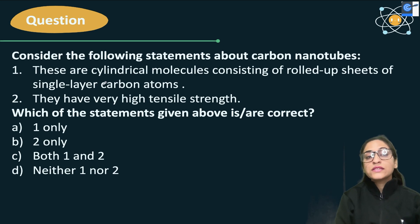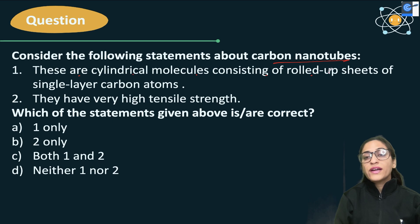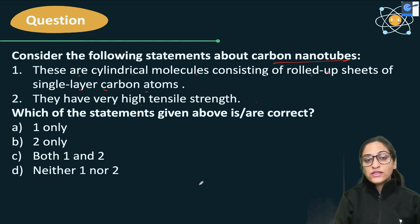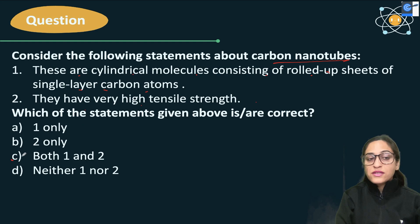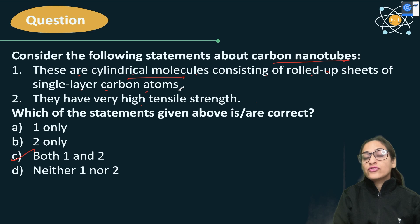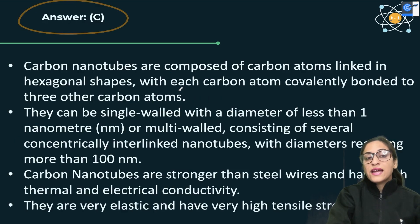Next question: consider the following statements about carbon nanotubes. Statement 1: These are cylindrical molecules consisting of rolled-up sheets of single-layer carbon atoms. Statement 2: They have high tensile strength. Pause and tell which one is right. Both of them are correct. They are cylindrical nanomolecules made of rolled-up sheets of single-layer carbon atoms with high tensile strength.